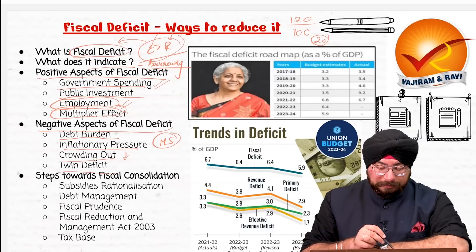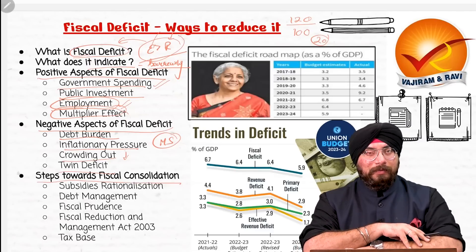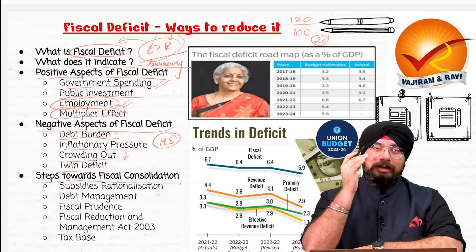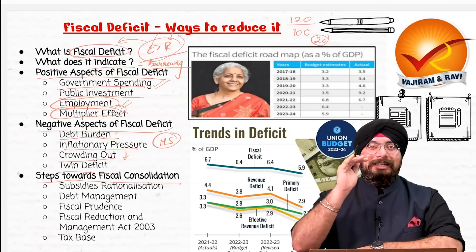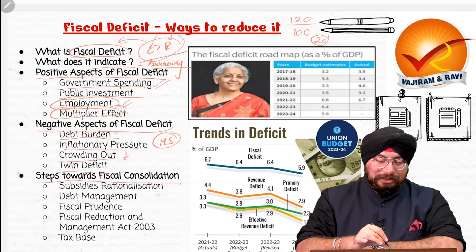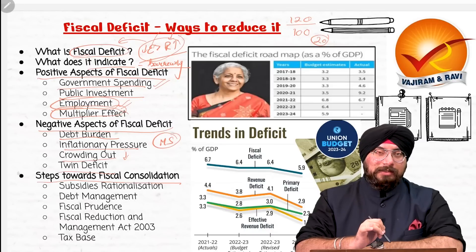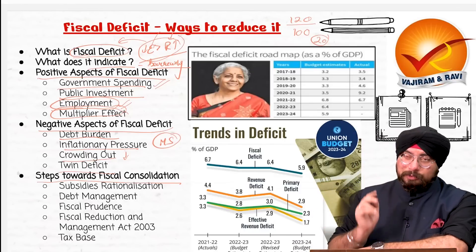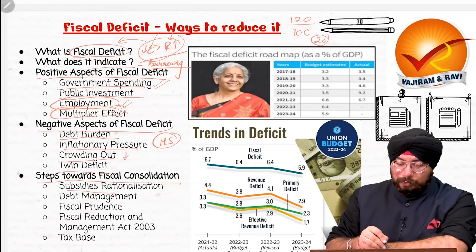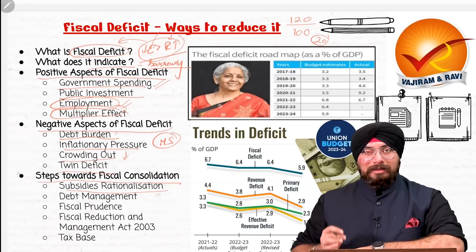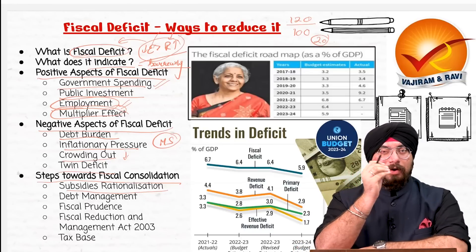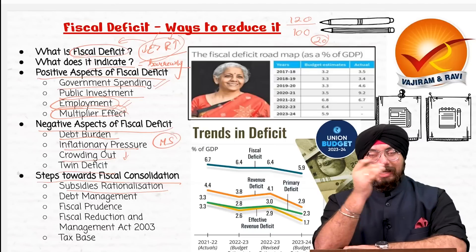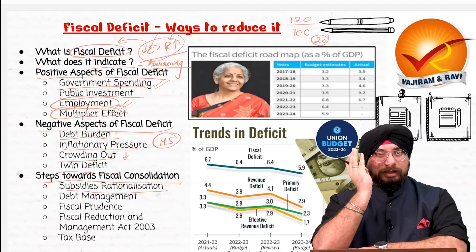What are the various steps taken by the government towards fiscal consolidation — to consolidate fiscal policy, reduce expenditure, and increase revenues? When expenditure gets reduced and revenue gets increased, the problem of fiscal deficit will be solved — that is fiscal consolidation. First step is subsidies rationalization. Subsidies are a very huge burden on the government exchequer. Various kinds of subsidies exist: nutrient-based subsidies, farming subsidies, MSME subsidies, LPG subsidy, fuel subsidy.